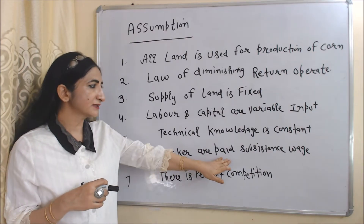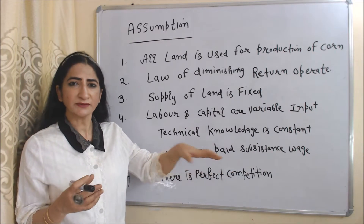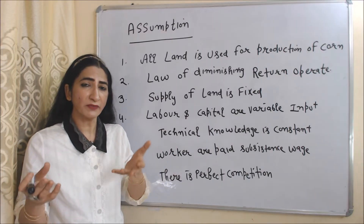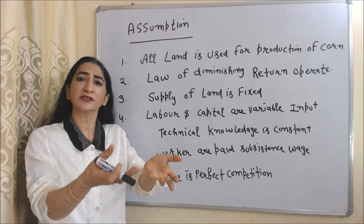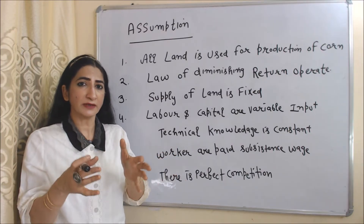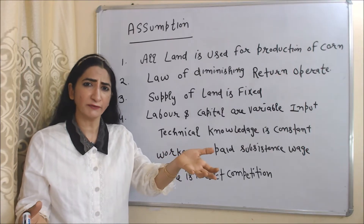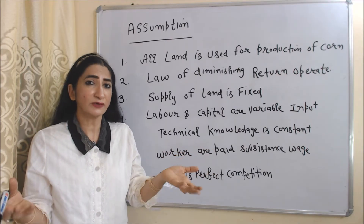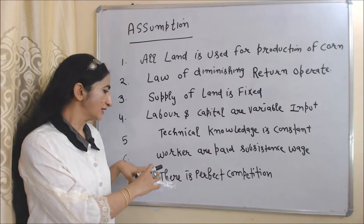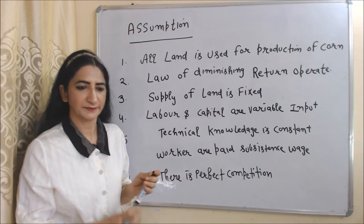Workers are paid subsistence wages, meaning workers are paid that amount of money in which they can survive only — they can buy food but cannot save any money. And there is perfect competition in the economy.